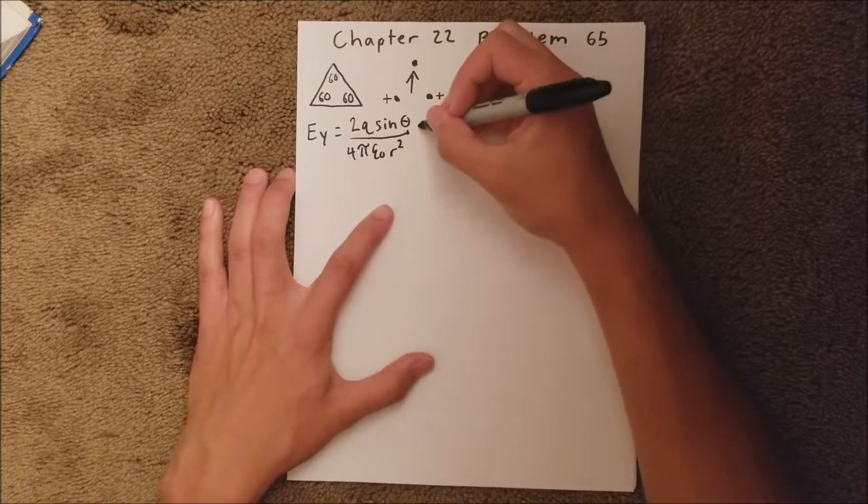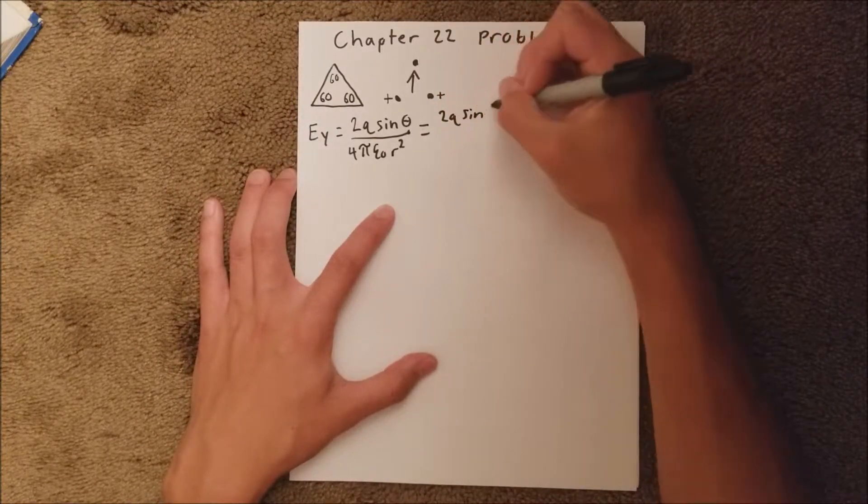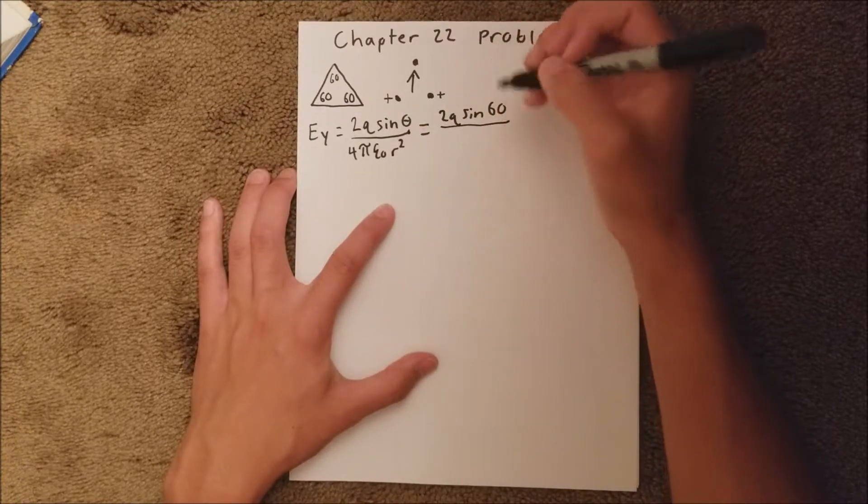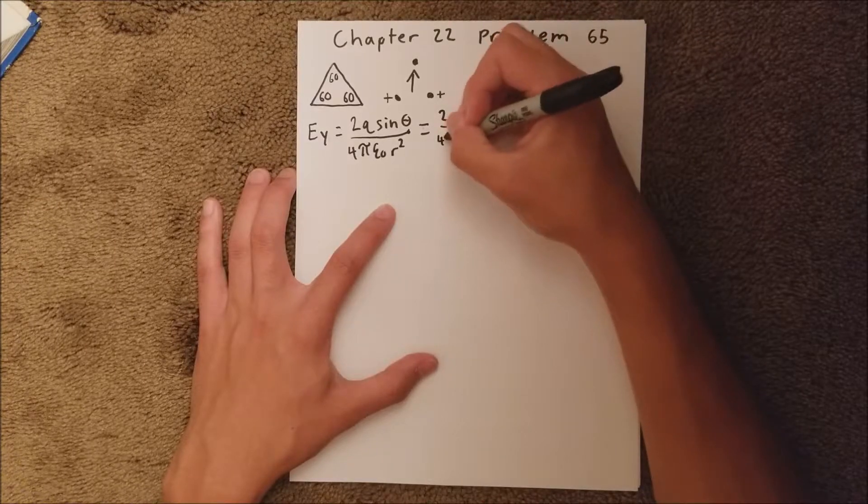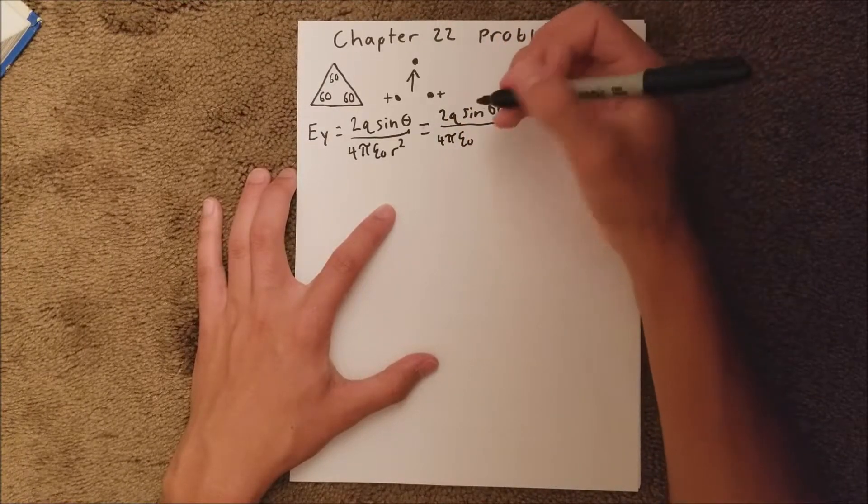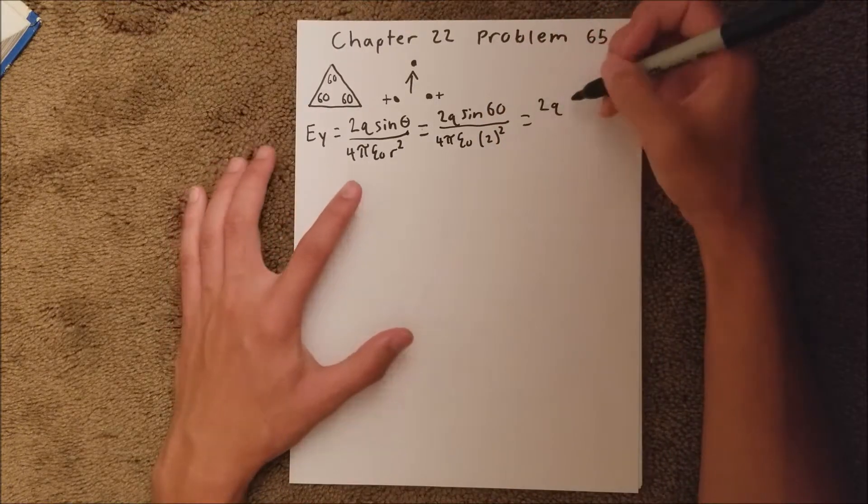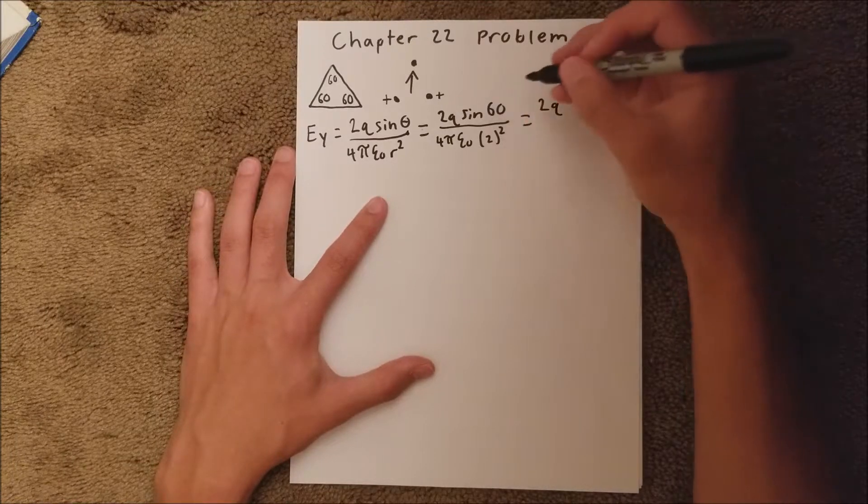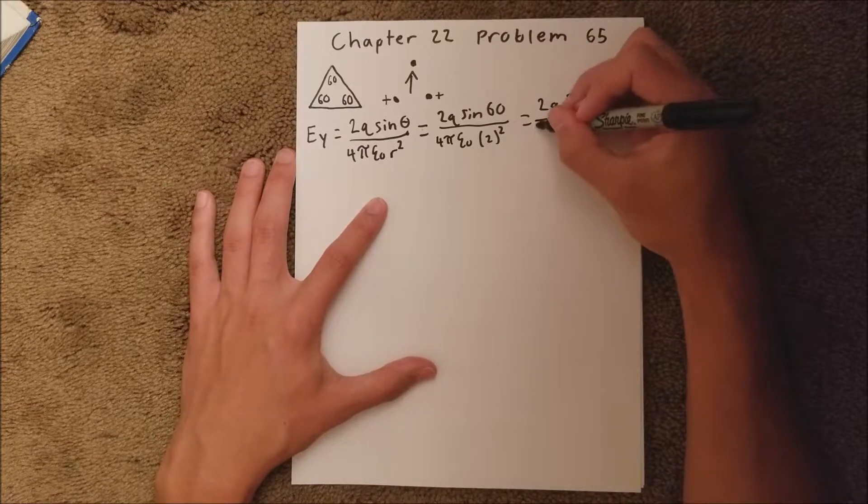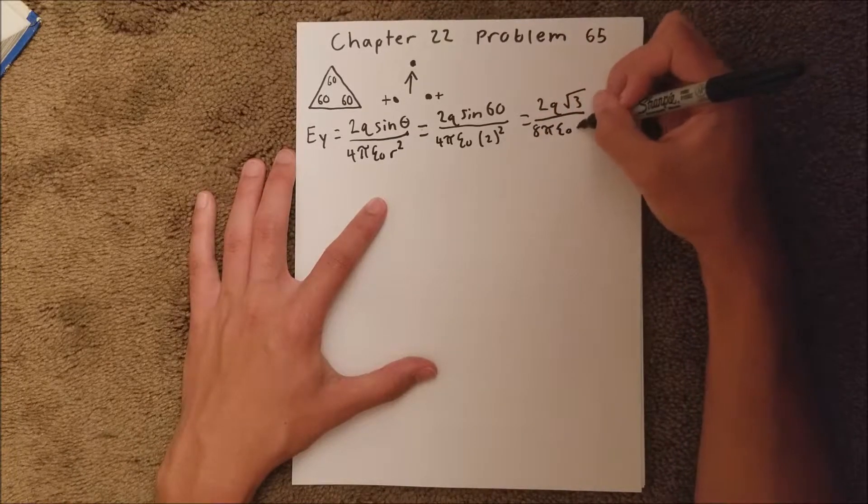And that is equal to 2q sine of 60, because this is 60 degrees, and that's the y component. So that's going to go over 4 pi epsilon sub 0, and our r is 2, so that's going to be 2q, and sine of 60 is root 3 over 2, so it's going to be root 3 over 8 pi epsilon sub 0 times 4.